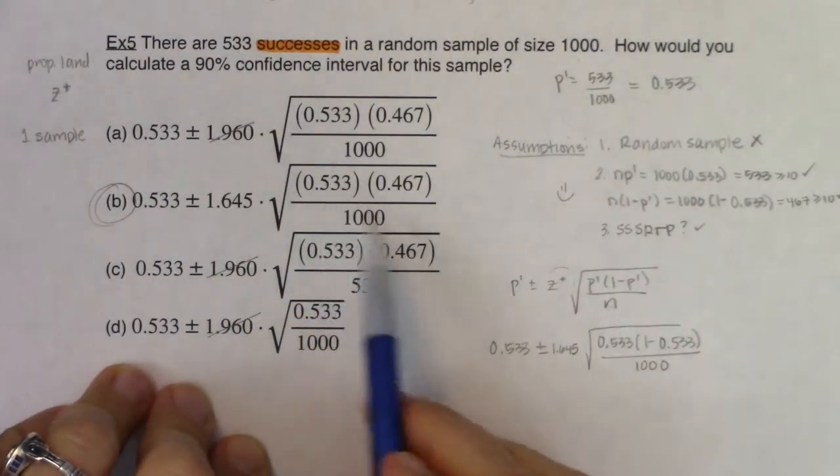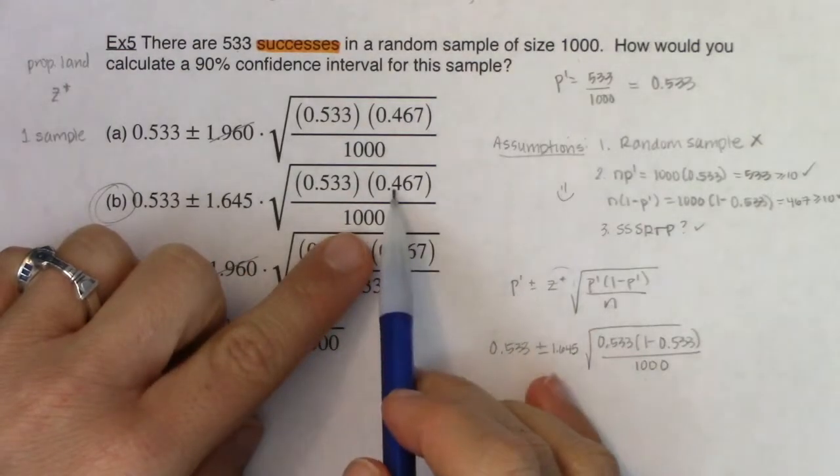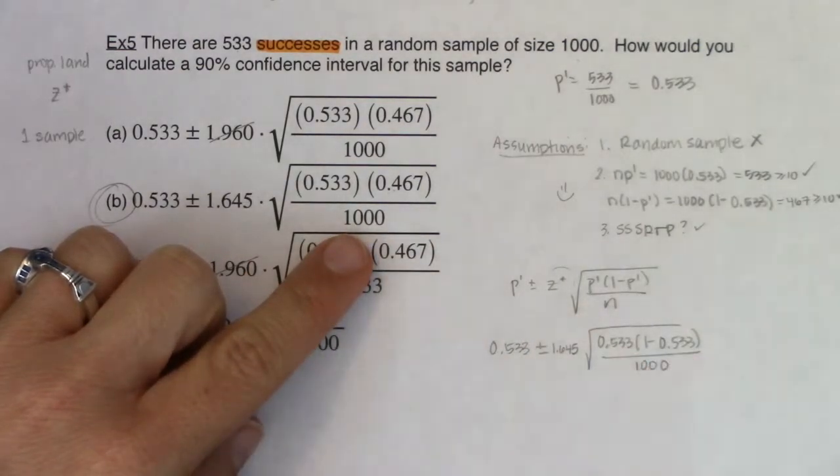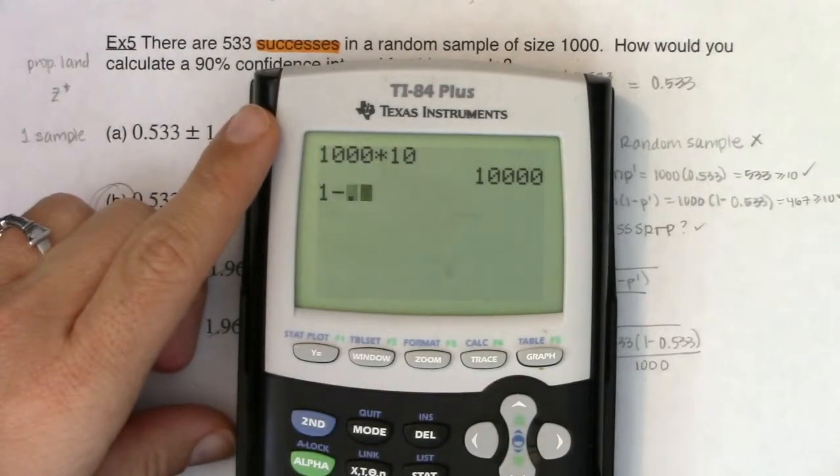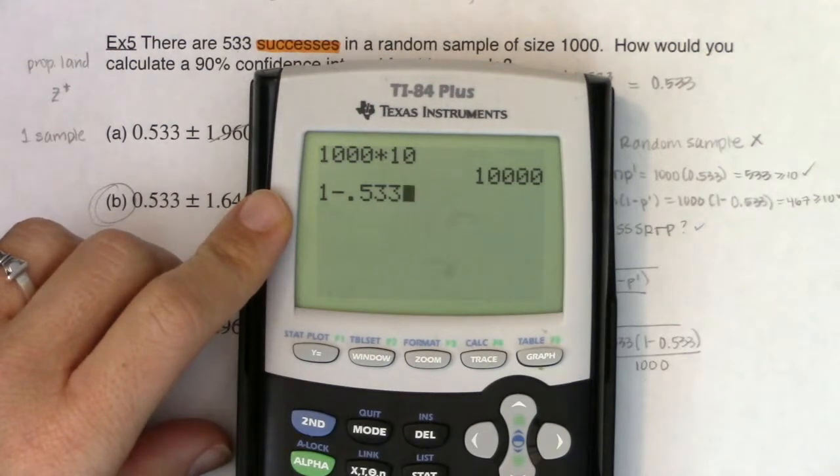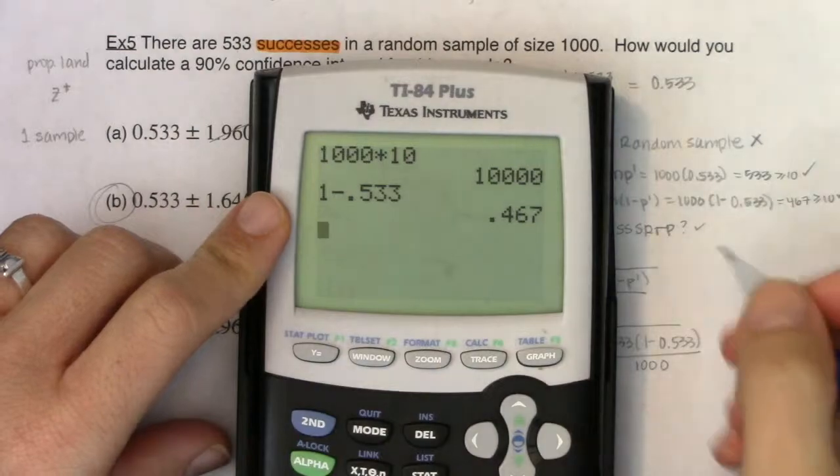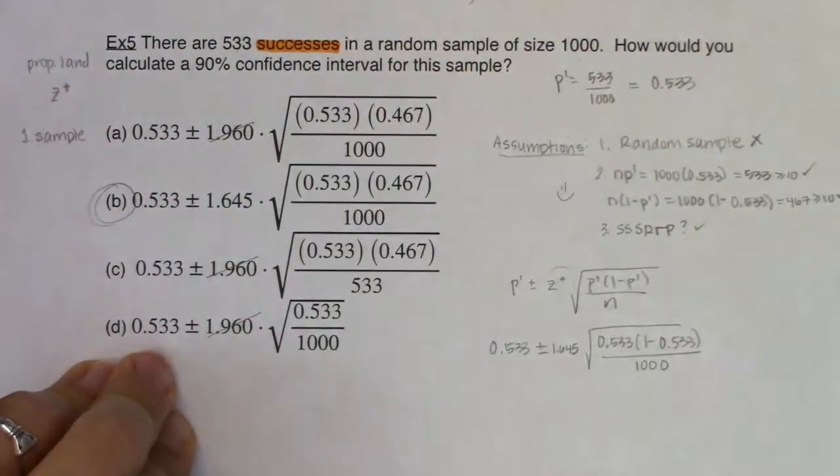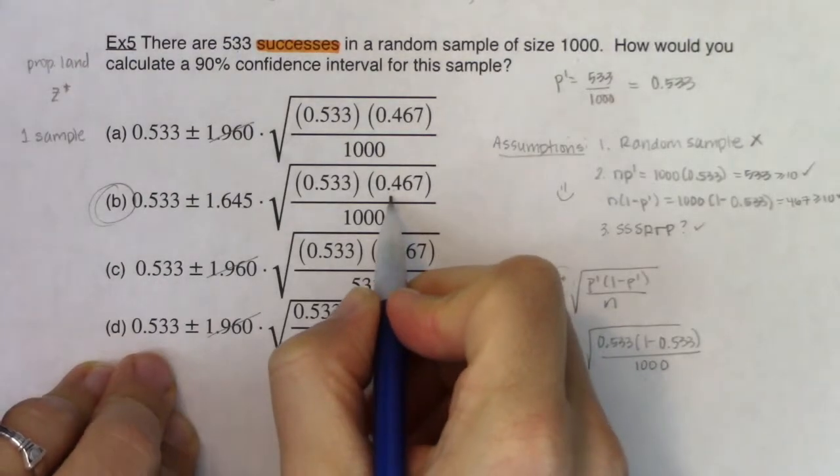And you might say, well, it doesn't quite match up. Like I see the 0.533, I see the thousand, but where's this 0.467 coming from? Don't forget that we could actually crunch this number. On my calculator, if I did 1 minus 0.533, if I got the complement to 53%, it would be about 47%. So that's where this number is coming from. So 1 minus 0.533 is 0.467.